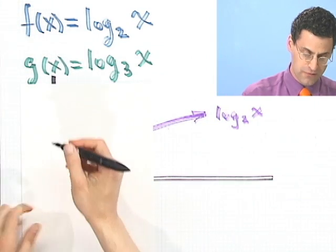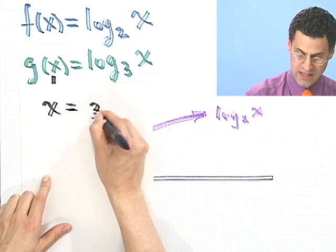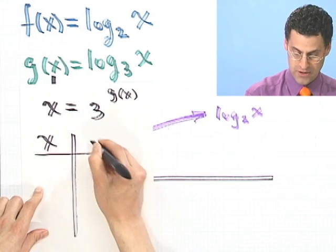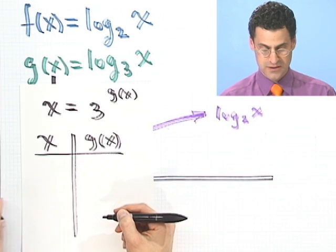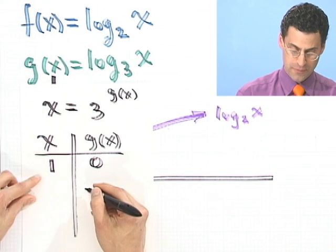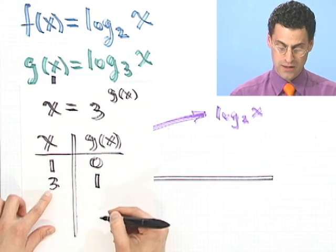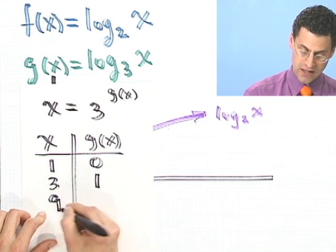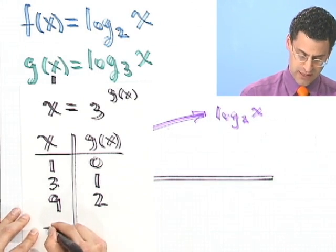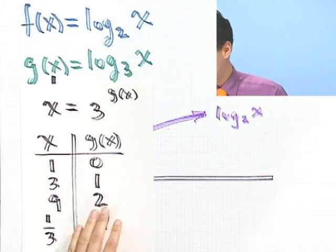You might want to convert this to see that x would equal 3 to the g(x). So I make a table x and g(x). Let's plug in a couple of points. If I put in a 1 here, 3 to what power gives me 1? 0. If I put in a 3 here, that's 1. If I put in a 9, this would be a 2 because 3 squared is 9. And then let's put in like a 1 third and realize that's negative 1.